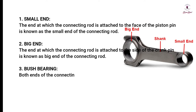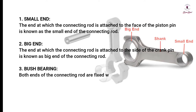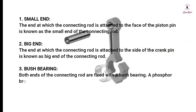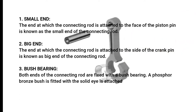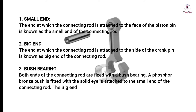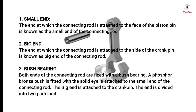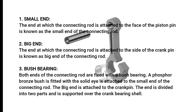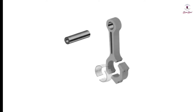Bush bearing: Both ends of the connecting rod are fixed with a bush bearing. A phosphor bronze bush is fitted with the solid eye and is attached to the small end of the connecting rod. The big end is attached to the crank pin, and the end is divided into two parts and is supported over the crank bearing shell.